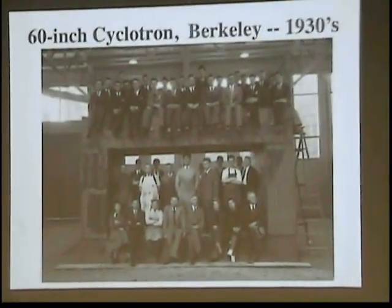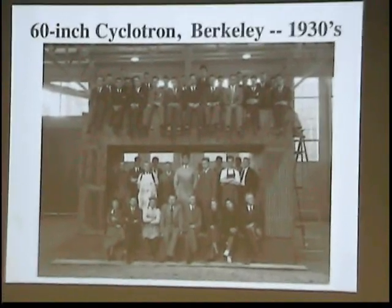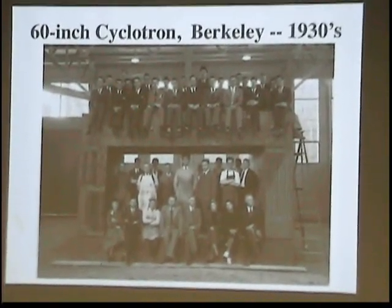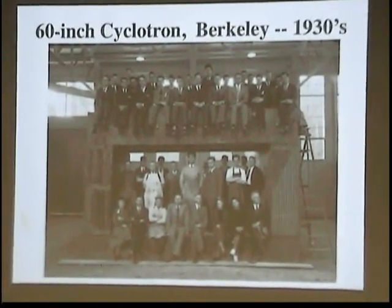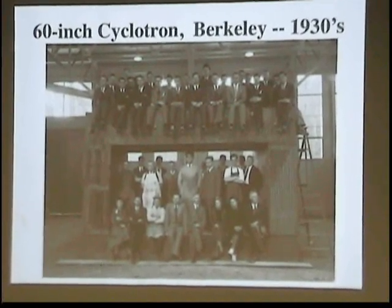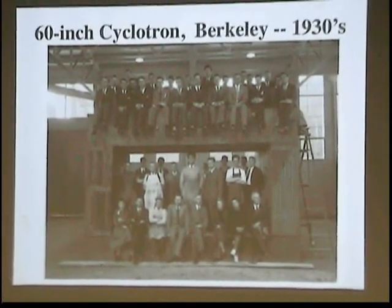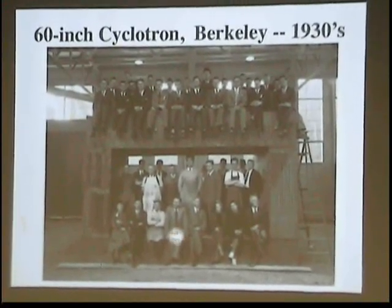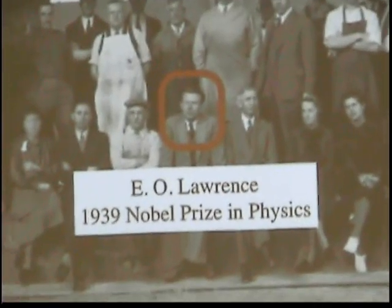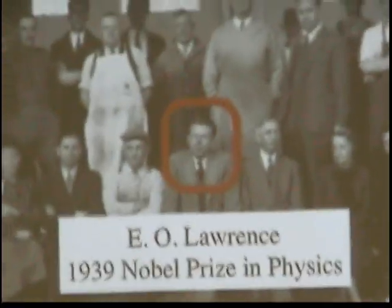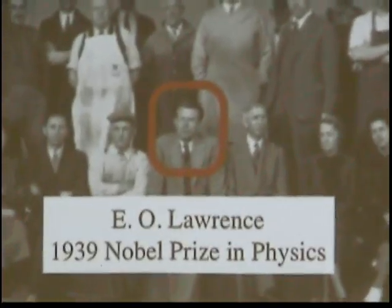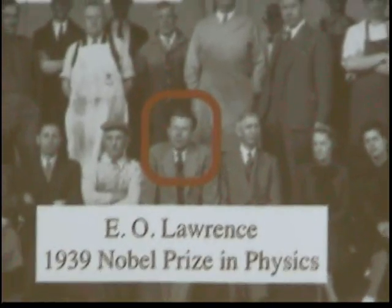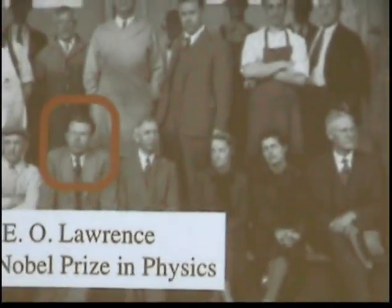A series of cyclotrons were built, and the home base for cyclotron building was the University of California in Berkeley. This is a group who built one of the later generation ones — the 60-inch cyclotron in the radiation lab. This is Ernesto Lawrence. He won the Nobel Prize for physics in 1939, eight years after he invented the cyclotron. This was his team who built and operated these machines, including his mom and his brother.